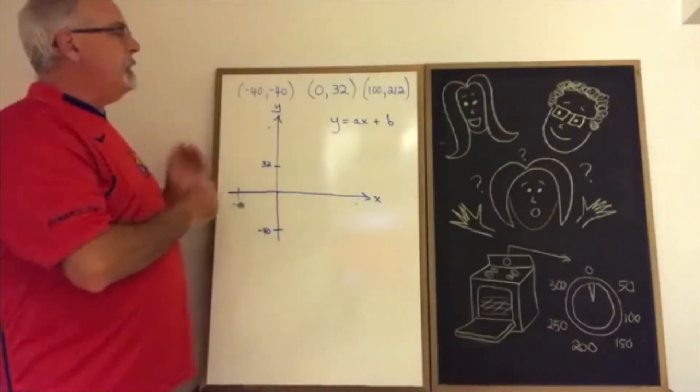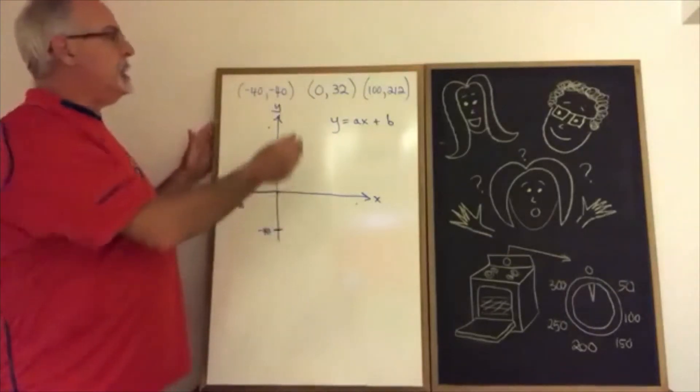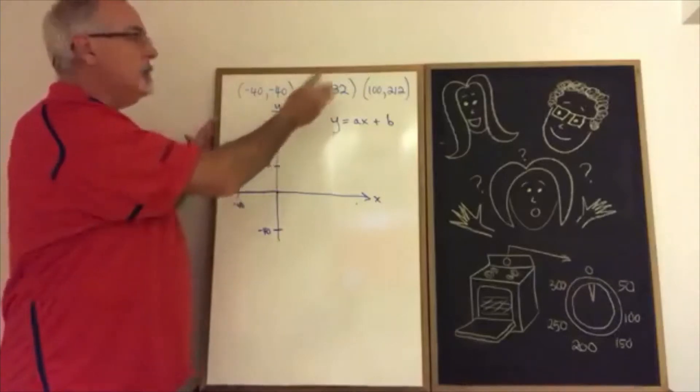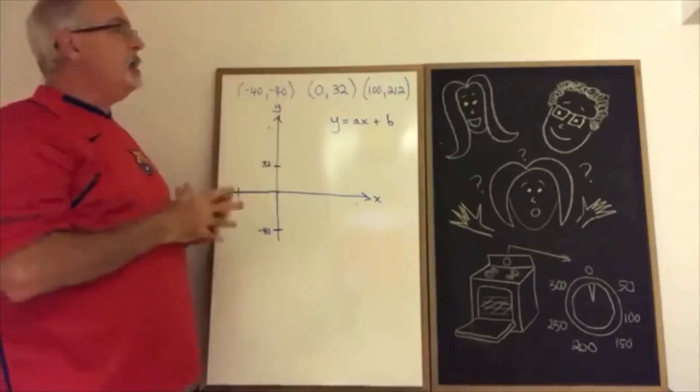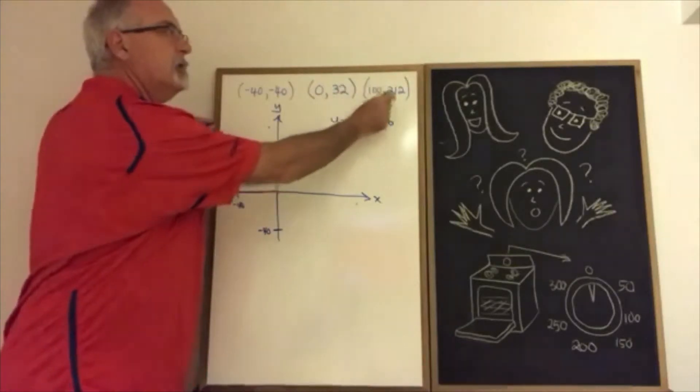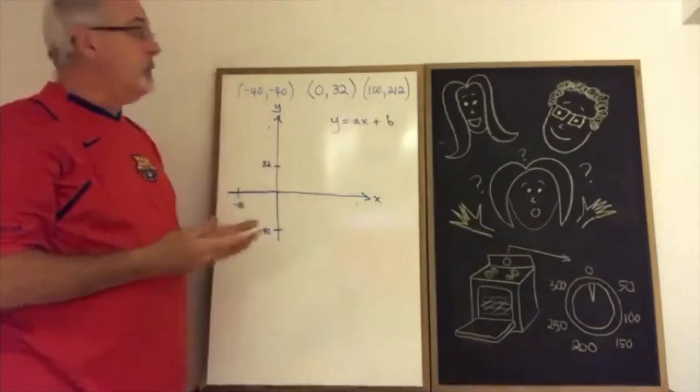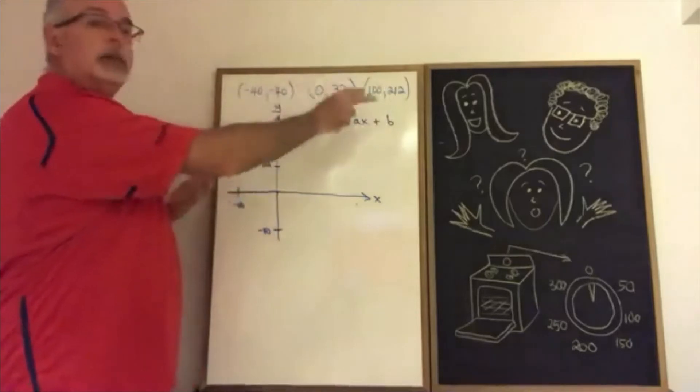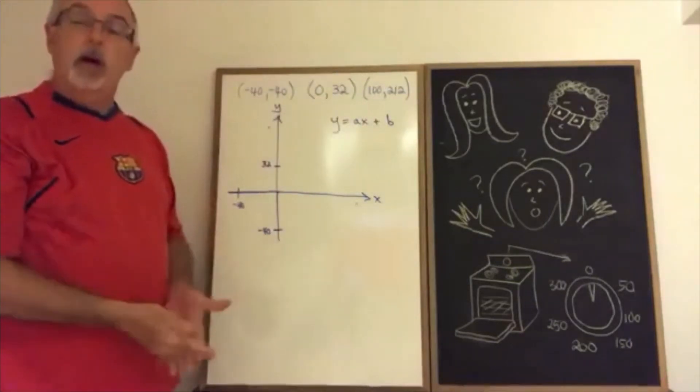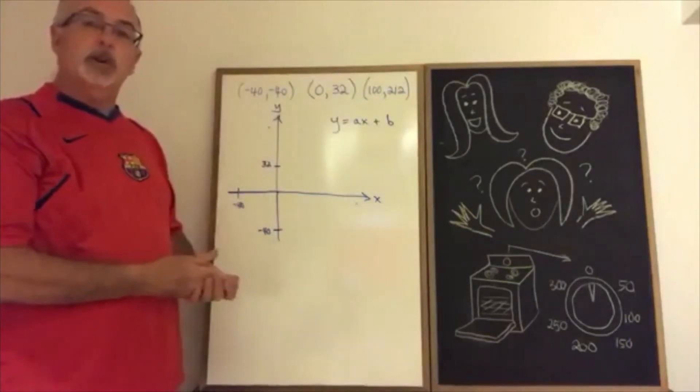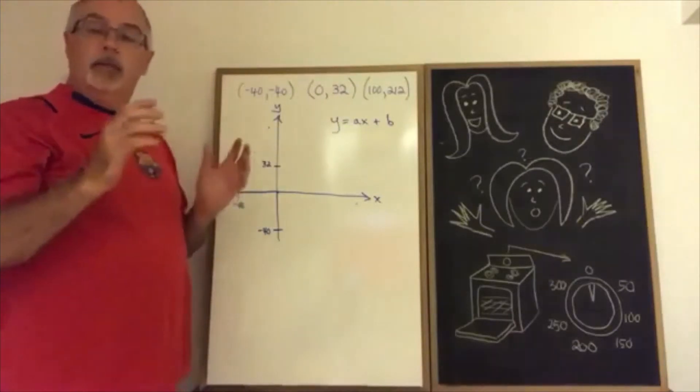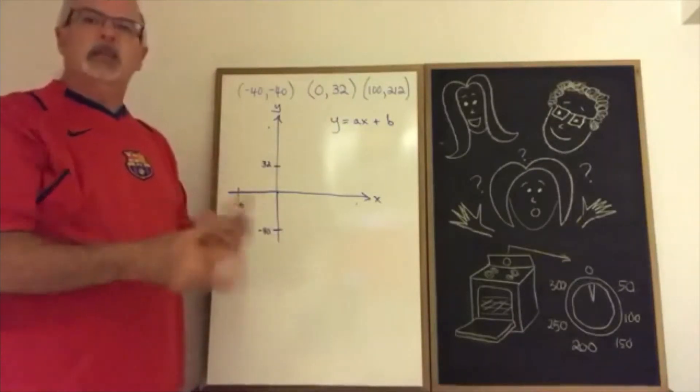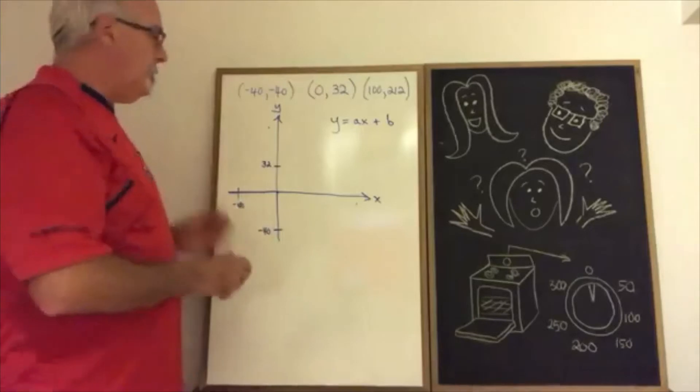I also knew that the freezing point of water is at zero degrees Celsius, which is 32 degrees Fahrenheit, and the boiling point of water is 100 degrees Celsius, which is 212 degrees Fahrenheit. So I had three points that are on this straight line, and I had to figure out the equation so that I could plug Fahrenheit equals 350 into it to see what the Celsius value would be.